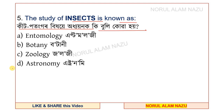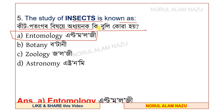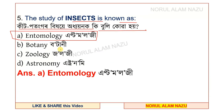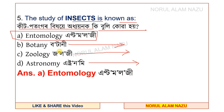The options are: a) entomology, b) botany, c) zoology, d) astronomy. Entomology, botany, zoology, and astronomy are all given as options and are good patterns to know.